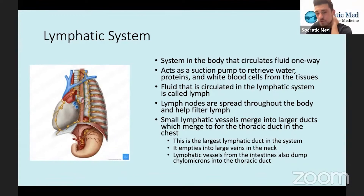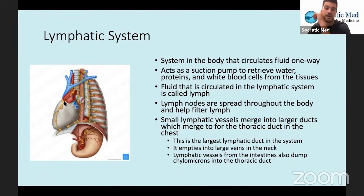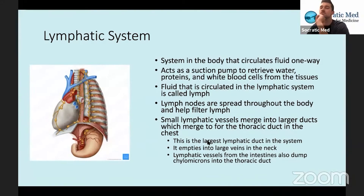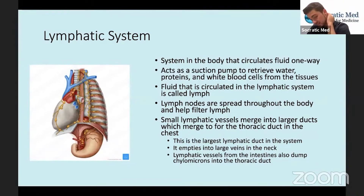Lymph nodes are spread throughout the body and help filter lymph — they're dispersed throughout the lymphatic system. As you can see even here to the left, those little dots are all lymph nodes. Small lymphatic vessels merge into larger ducts, which merge into the thoracic duct in the chest. The thoracic duct is the largest lymphatic duct in the system and it empties into large veins in the neck. This is the point where the lymphatic system meets the circulatory system.